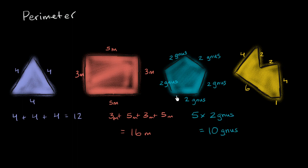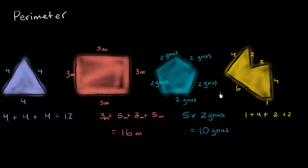Where a Gnus is a completely made-up unit of length. Here we have a more irregular polygon, but same exact idea — how would you figure out its perimeter? Well, you just add up the lengths of its sides. I'll just assume these are some generic units. The perimeter will be 1 plus 4 plus 2 plus 2 plus 4 plus 6. One plus four is five, plus two is seven, plus two is nine, plus four is 13, plus six is 19. So this figure has a perimeter of 19 in whatever units these distances are given.